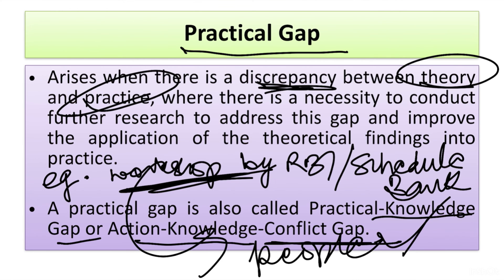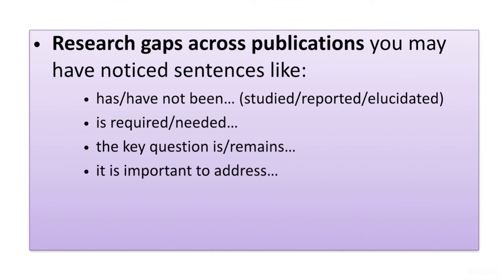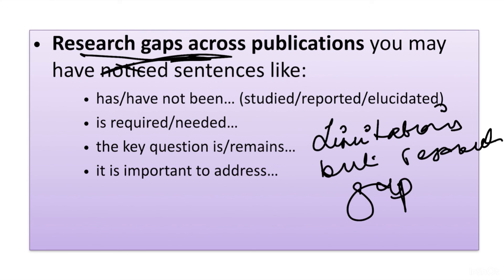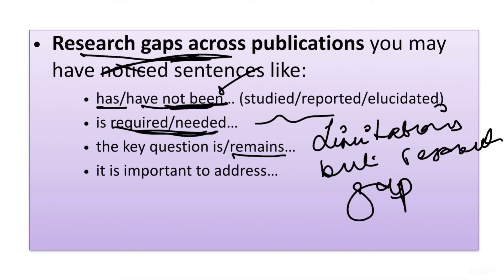Now, how do you identify research gaps? Whenever you read any research paper or manuscript, note down its limitations — limitations are nothing but your research gaps. Look for phrases such as 'has not been' or 'have not been,' which indicate a research gap. Also look for statements like 'further study is required,' 'the key question remains unanswered,' or 'it is important to address certain questions.' I hope you've learned something — please subscribe to my channel. Thank you and have a nice day.